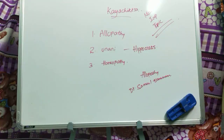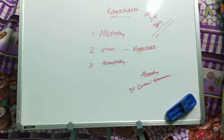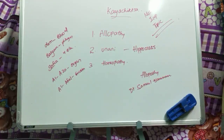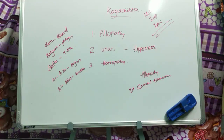Arabs and Persians further developed the Unani system of medicine. Hippocrates developed and introduced this system, and later Arabs and Persians developed it. For a short note on Unani, mention who is the founder, who is the father, that it is based on humoral theory, the four humors, its Greek origin, and that Arabs and Persians developed it.